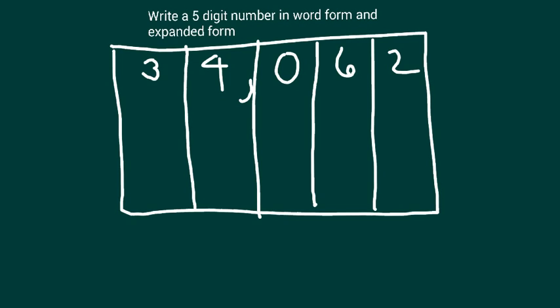Here, we're going to work with this number to write it in word form and expanded form. The digits that we have are 3, 4, 0, 6, 2. Let's break apart this number by the value of each of these digits. The two is in the ones place and its value is two.